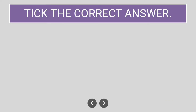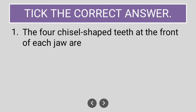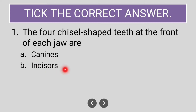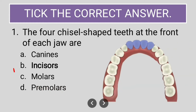Let us begin with 'Tick the Correct Answer.' The first question is: the four chisel-shaped teeth at the front of each jaw are — the options are canines, incisors, molars, premolars. The correct answer is incisors. The four chisel-shaped teeth at the front of each jaw are called incisors.